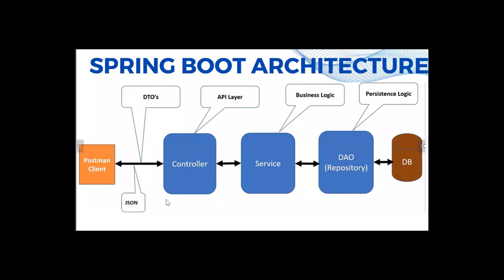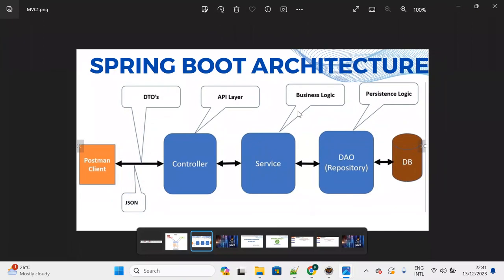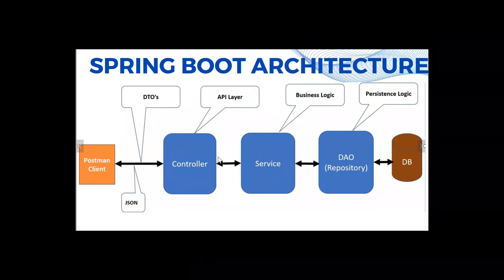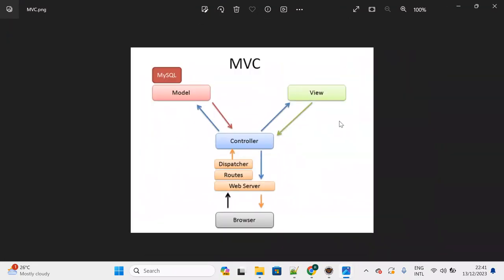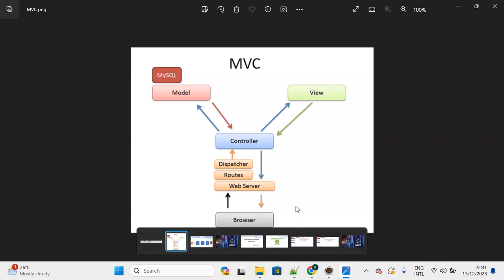In RESTful architecture, the response comes back as JSON. But in a web application, the response comes as a view layer — nothing but a web page, for example JSP. The rest of the execution flow is the same; the only difference is that instead of returning JSON, we return a web page — JSP.